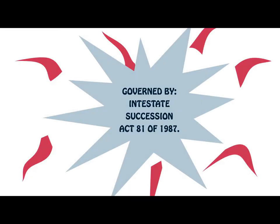The order of intestate inheritance or succession is governed in terms of the Intestate Succession Act 81 of 1987. Section 1, subsection 1 of this Act sets out the provisions dealing with how a person's intestate estate is to be divided, whereas sections 1, subsections 2 to 7 deal with related provisions regarding the division of the intestate estate.